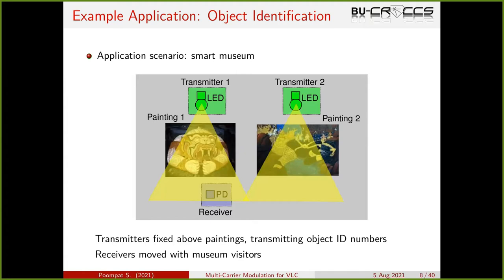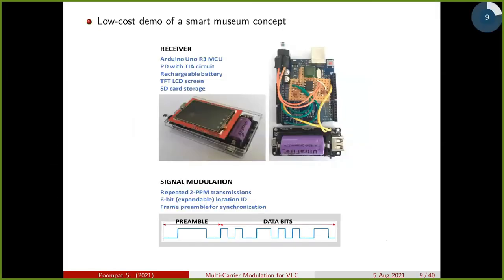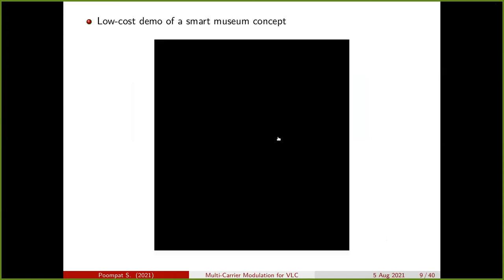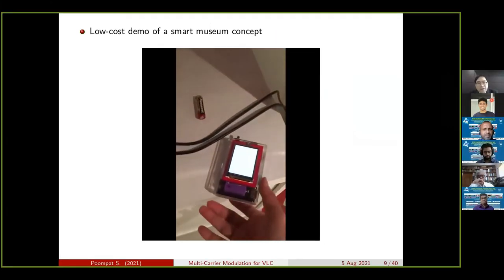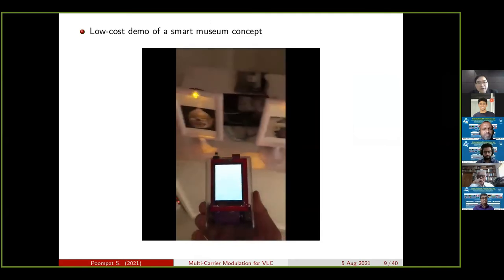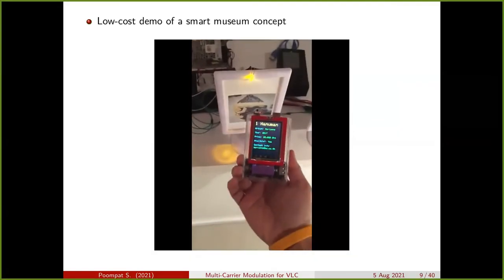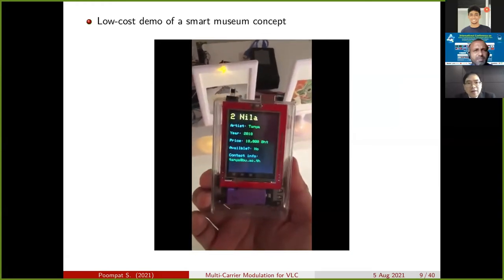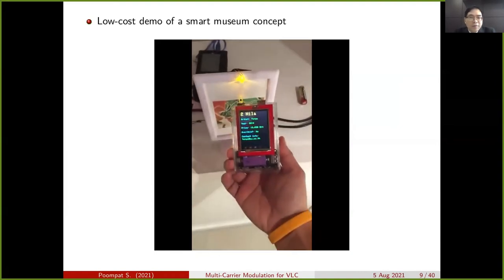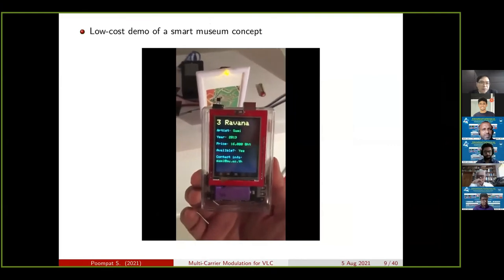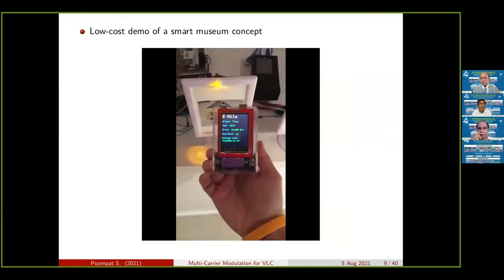Another application of VLC is object identification. Imagine a museum where each painting's LED transmits its ID number. A visitor holds a handheld unit with a photodiode; when standing in front of a painting, the unit receives the painting ID and displays relevant information. At Bangkok University, they created a low-cost demo using an LED with an RGB screen transmitting the painting ID using binary pulse position modulation. A short video demonstrates a visitor picking up the handheld unit and receiving painting information as they move around the museum.